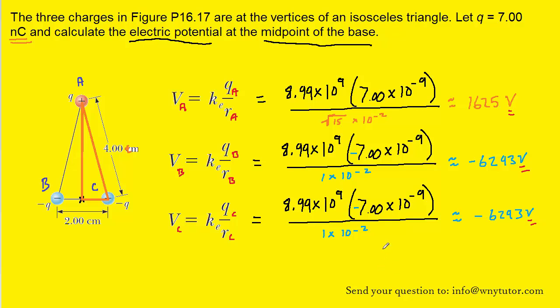And now, to find the total electric potential, all we have to do is add the three individual electric potentials. We'll notice that electric potential V is not a vector quantity, so we don't have to worry about any X or Y components. We simply algebraically add all three of the individual electric potentials to get the total electric potential.